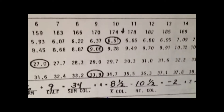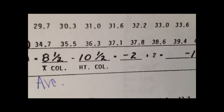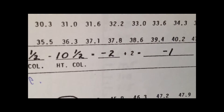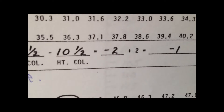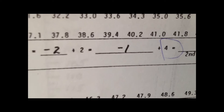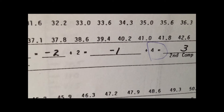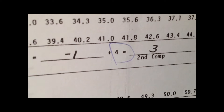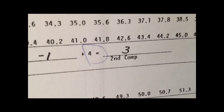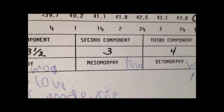You then subtract your height column value of 10.5, which gives you negative 2. Once you get that number, you divide it by 2, giving you negative 1. Then you add 4, which is a constant, and that gives you the number 3 — the second component, mesomorphic 3. So this person is in the low category for mesomorphic somatotype.